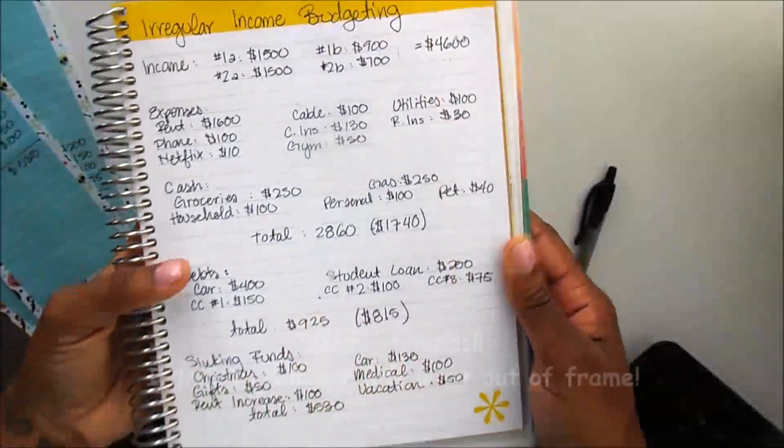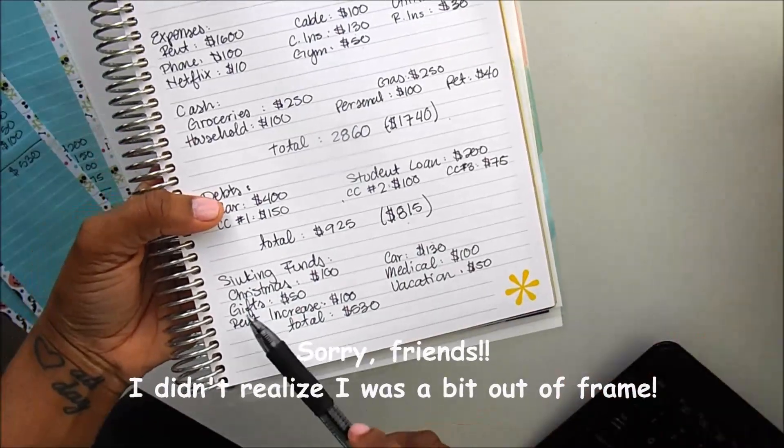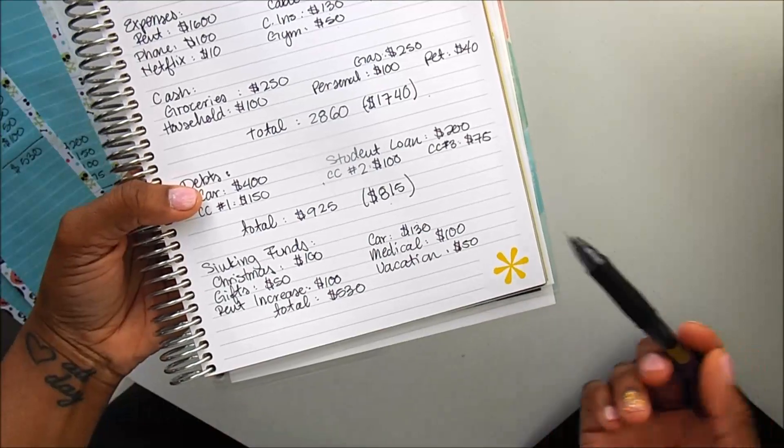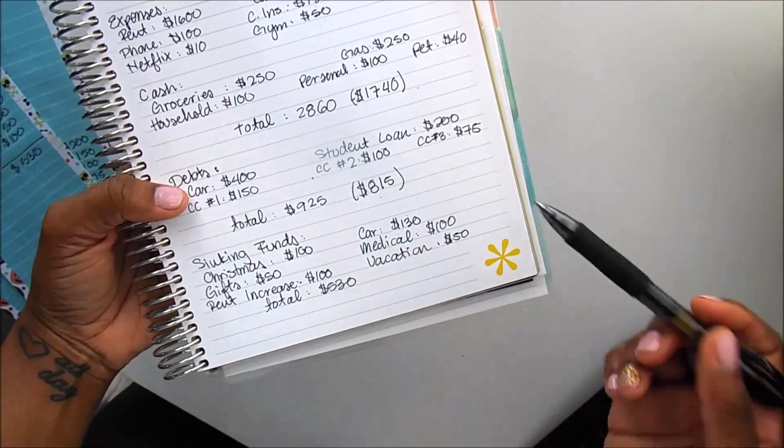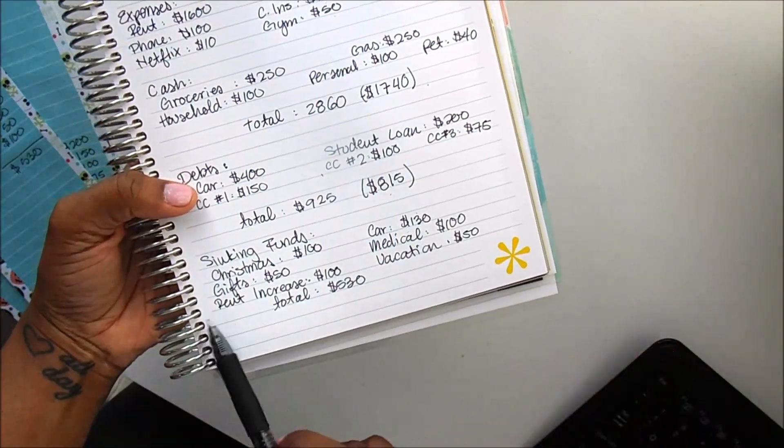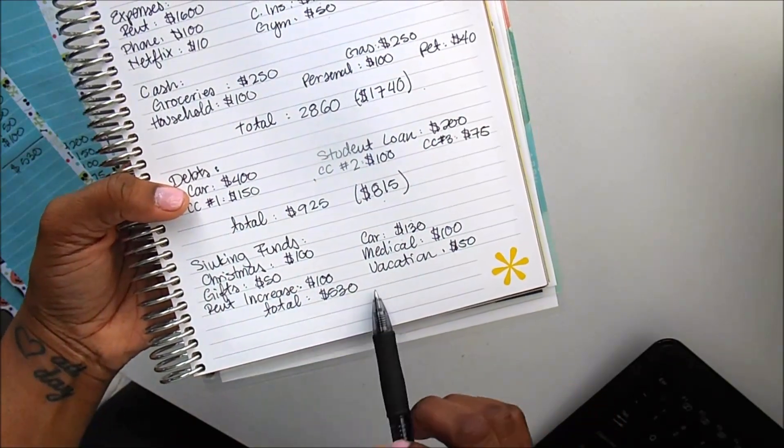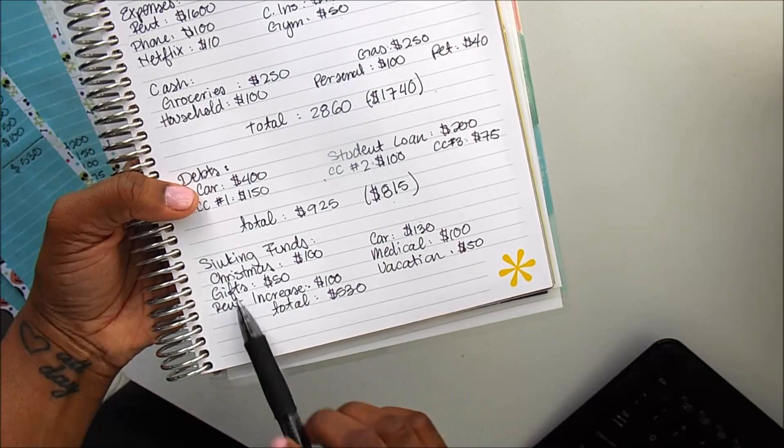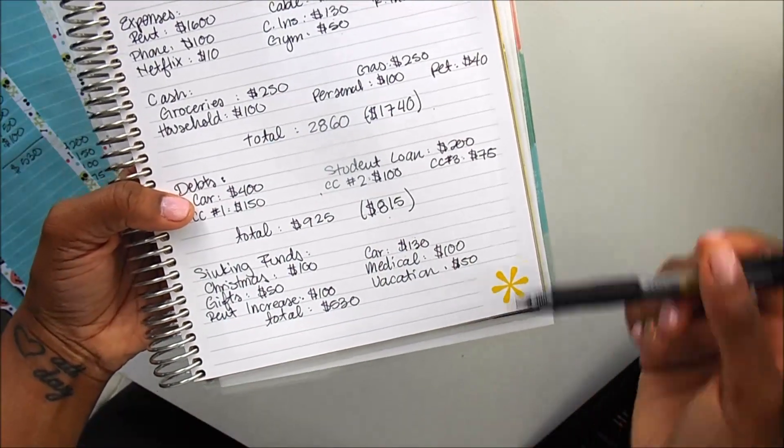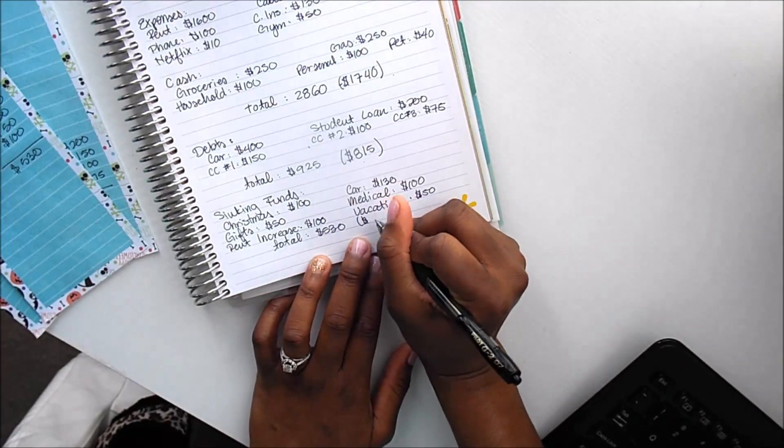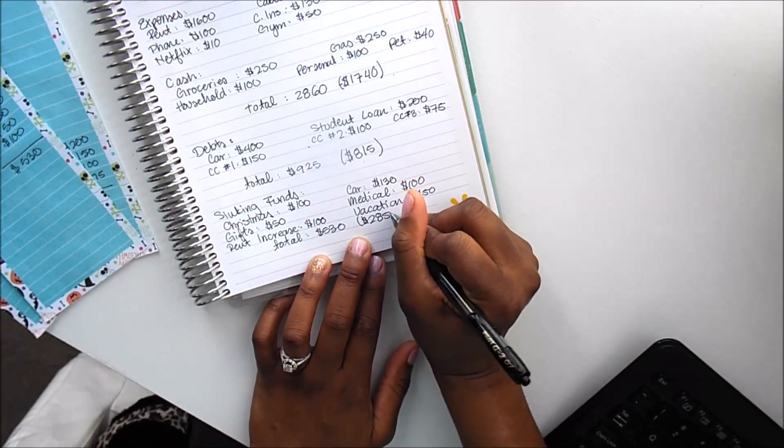Okay, so our sinking funds are done. So I did Christmas for $100, a car for $130, which is like car maintenance or car fund, gifts at $50, medical at $100, rent increase at $100, and vacation at $50. So the total would be $530 that is going towards your sinking funds based on this scenario. So the leftover that we have now is $285.